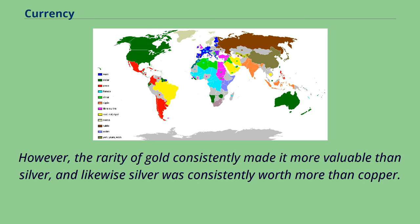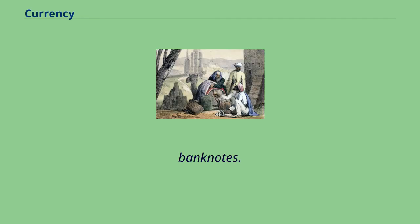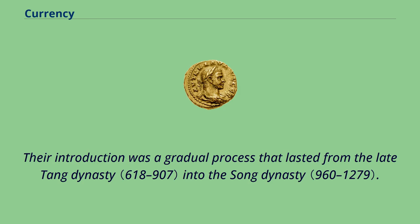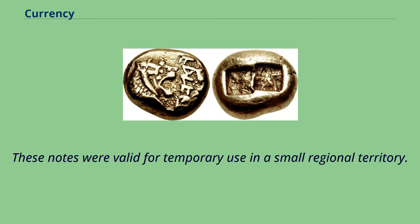In pre-modern China, the need for credit and for a medium of exchange that was less physically cumbersome than large numbers of copper coins led to the introduction of paper money, i.e. banknotes. Their introduction was a gradual process that lasted from the late Tang Dynasty into the Song Dynasty. It began as a means for merchants to exchange heavy coinage for receipts of deposit issued as promissory notes by wholesaler shops. These notes were valid for temporary use in a small regional territory.